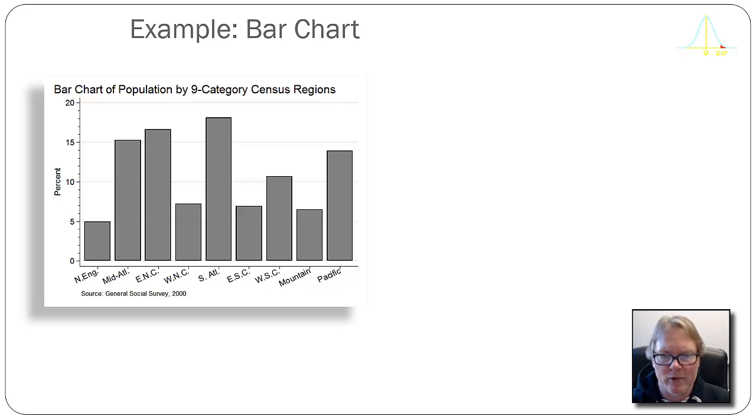Now I know because I produced this in STATA, which is my favorite statistical application, that the variable shows the values of New England to Pacific because the underlying values from left to right are New England equals one, Mid-Atlantic equals two, East North Central equals three, and so forth, up to the Pacific equaling nine.